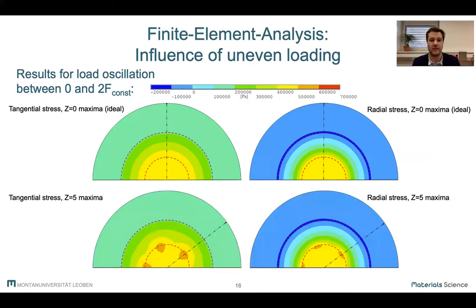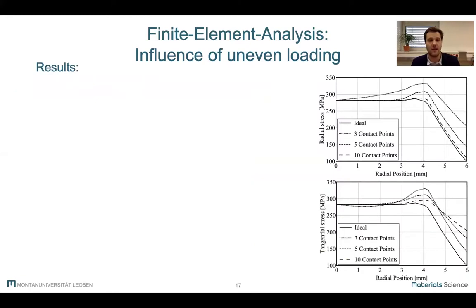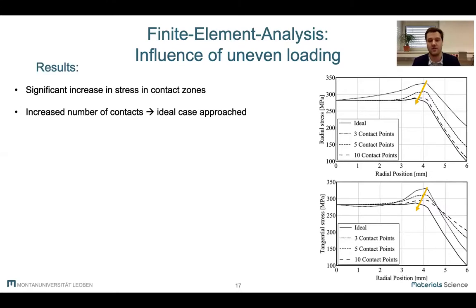Now, if you compare the ideal case to the case of five maxima, it is quite clear to see the zones of higher stress around the simulated contact points appear, both in the tangential and the radial stress components. If you take a closer look at the paths through the positions of maximum stress, you can see that there is a significant increase in stress in the contact zone between the loading ring and the specimen. If the number of contact points is increased further, the ideal case is approached, which is what was to be expected. Now, if stress maximum at the loading ring occur, there should be a higher number of fracture origins in those regions.